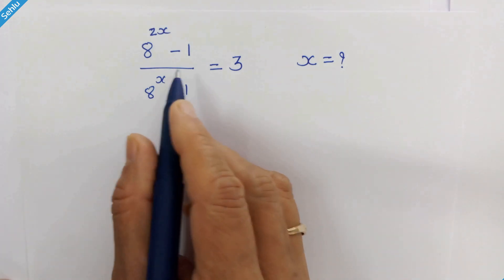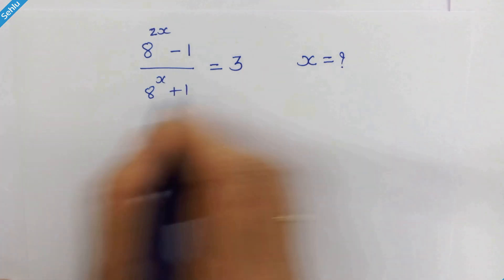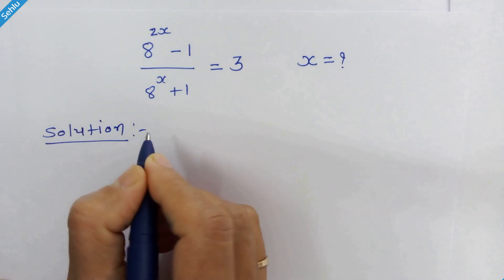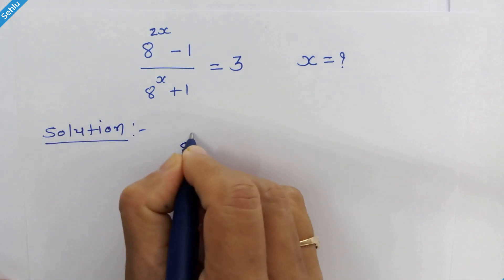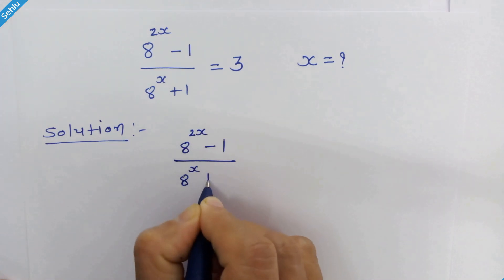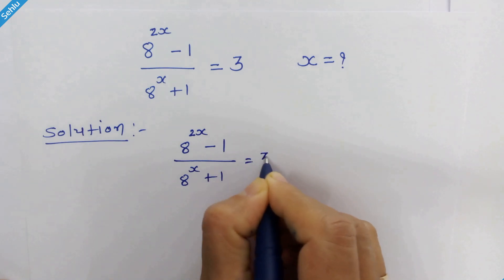Hello friends, this is our question. Let's find out the value of x. So our question is 8 raised to 2x minus 1 upon 8 raised to x plus 1 is equal to 3.